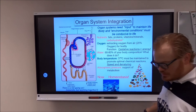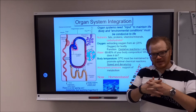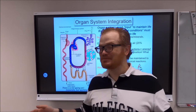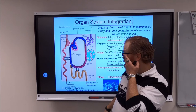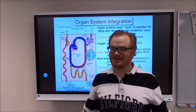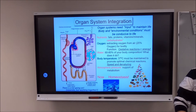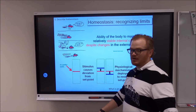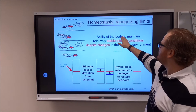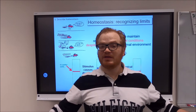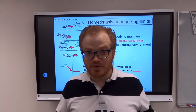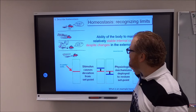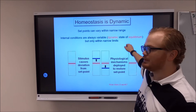Organ systems are integrated — they all work in unison to keep you at homeostatic balance. Your digestive system brings in food that gets picked up by your cardiovascular system, which cycles around and feeds your cells and carries oxygen from the lungs; all of this produces waste products filtered out by your urinary system. They are all interrelated. Homeostasis is the ability of the body to maintain relatively stable internal conditions despite changes in the external environment.